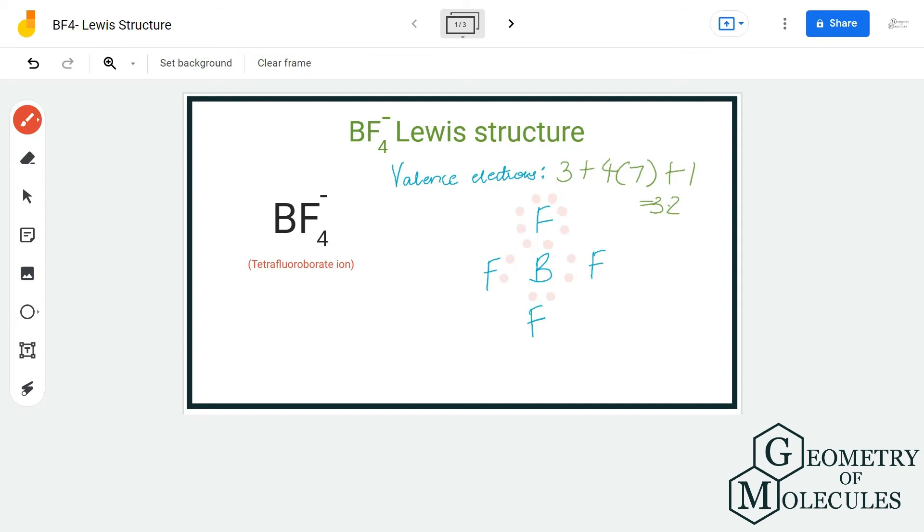If you look here closely, each fluorine atom requires six valence electrons to have a complete octet. As we have 24 of them, I'm going to place six valence electrons around each fluorine atom. Doing that, I will be using up all my valence electrons.